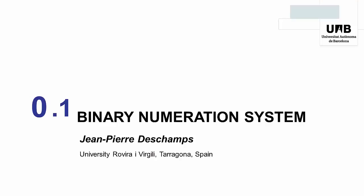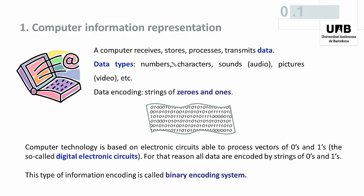In this lesson and in the following one, some prior knowledge necessary to follow our course on digital systems will be presented. This first lesson is about the binary numeration system. Computers receive, store, process, and transmit data of different types — for example, numbers, characters, sounds, or pictures. The common point is that all those data must be encoded using zeros and ones. Computer technology is based on electronic circuits that process vectors of zeros and ones: the so-called binary encoding system.